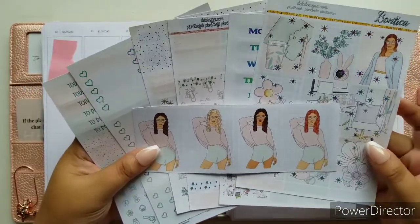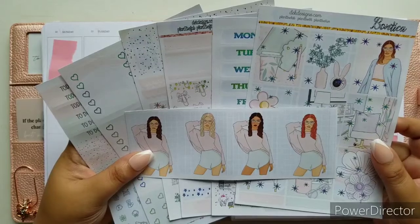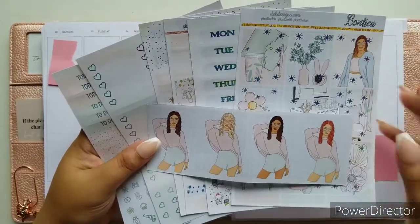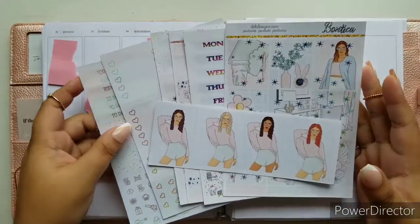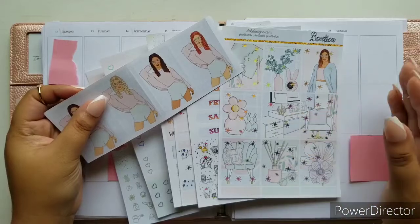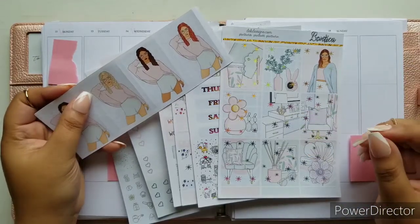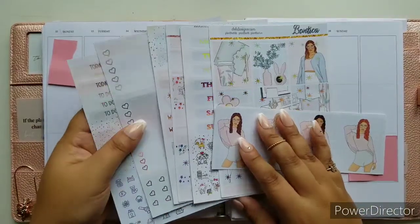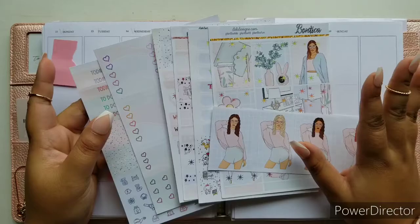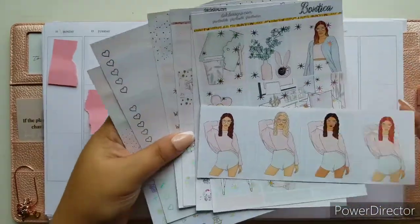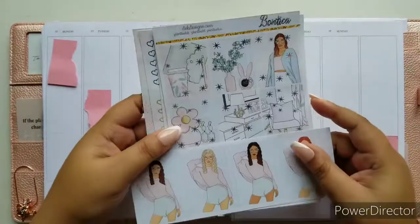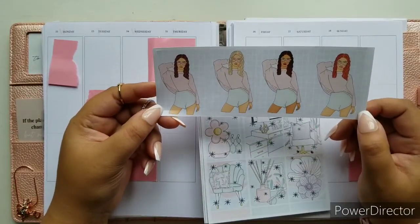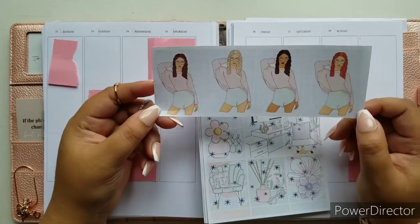This week we are using this gorgeous kit named Bontica. I am so butchering that. It's basically like a plant lover's dream right here. And I love the pastel greens and the silver hollow foil that is on this kit.